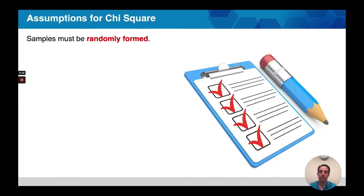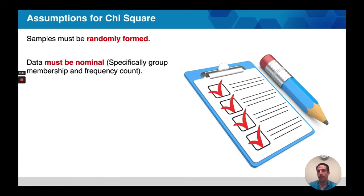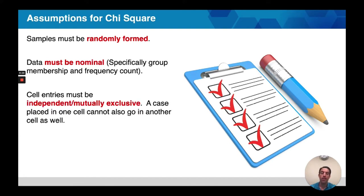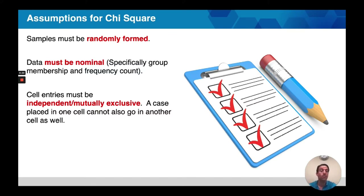What are the assumptions of a chi-square test? First, we assume that the samples are randomly formed and independent of one another. The data has to be nominal — we're looking for things like group membership or frequency counts. The cells have to be independent or mutually exclusive. This means you can't be in both the conversion cell and the non-conversion cell, or in both variant A and the control. An example from teaching social research: someone who is multiracial might be classified in multiple groups — we would have to come up with a rule to place them in one category for the purposes of analysis.